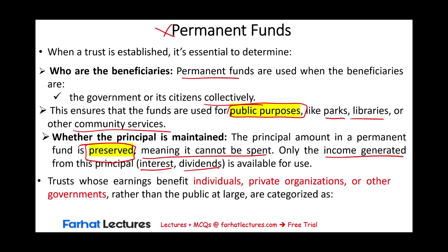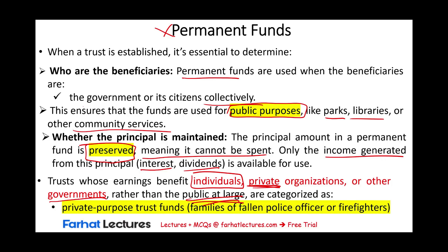Trusts whose earnings benefit individuals, private organizations, or other governments — rather than the public at large — are called private purpose trust funds, and we'll look at those later. An example: a fund to help the families of fallen police officers or firefighters is too specific. That is no longer a permanent fund; it's a private purpose trust fund. The earnings must serve a public purpose — the citizens at large or the government — for it to qualify as a permanent fund.